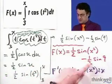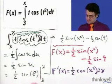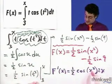And then this minus 1 half sine 9, that's just a number. That's a constant. The derivative of a constant is 0. So in fact, that's the answer.